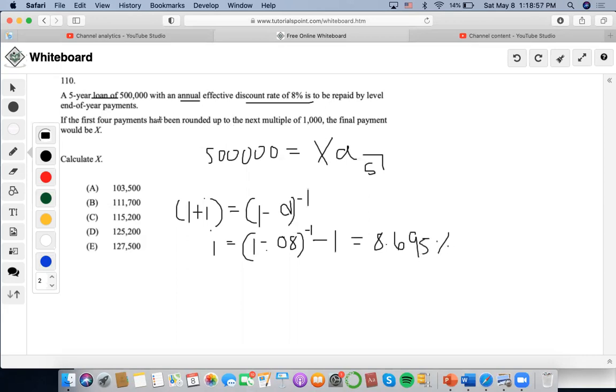It says over here that if the first four payments have been rounded up to the next multiple of a thousand, the final payment would be x. So when they're speaking of final payment, this gears towards a drop slash balloon payment type concept. We always have to look at certain terminologies that will hint at certain concepts. But they're talking about the first four payments.